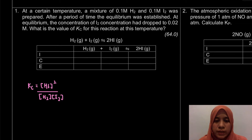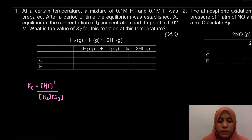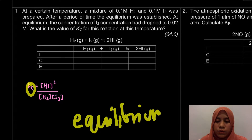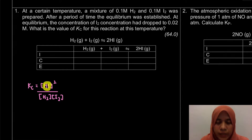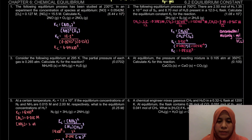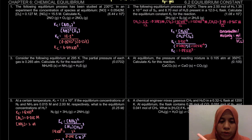From the problem it is mentioned that at equilibrium the concentration of I2 had dropped to 0.02 molar. When we're talking about the calculation of KC, it means that the system is in equilibrium. So all the concentrations of HI, H2, and I2 must be concentration at equilibrium. For some examples, the concentration of species at equilibrium is given directly, so we can substitute the values straight away into KC.